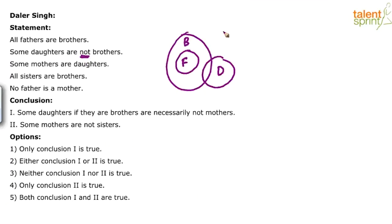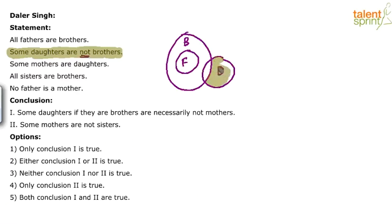Remember, you have to be careful since this is a 'some not' type of statement. When we say 'some daughters are not brothers,' I am shading this statement and will show the similar shading in the diagram so you can understand what it means. Some daughters are not brothers — we are referring to those outside daughters which are not brothers.